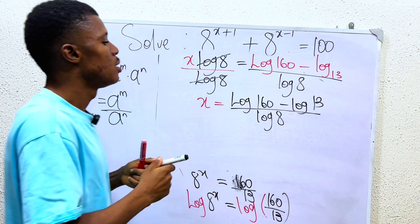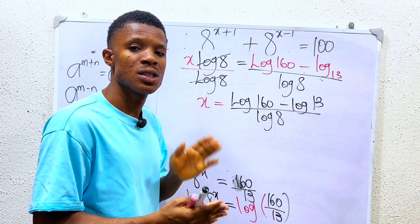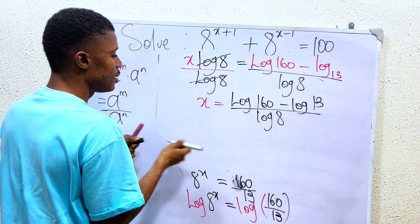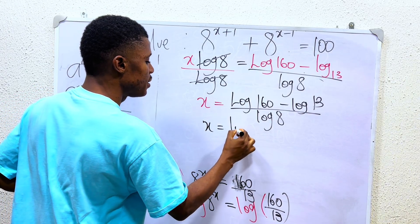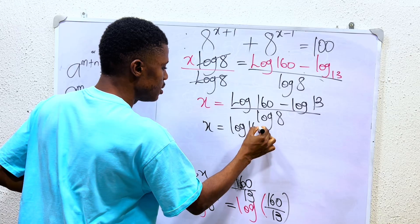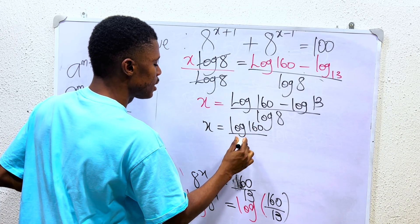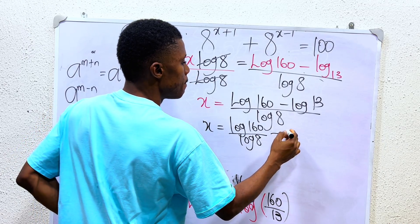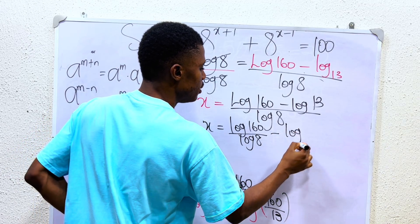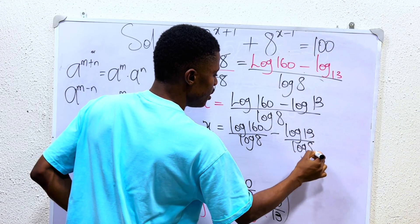So at this point, we can actually simplify. To simplify, it is very easy. We can write this as, simplifying the fractions, we have it as log of 160 divided by log of 8 minus log of 13 divided by log 8.